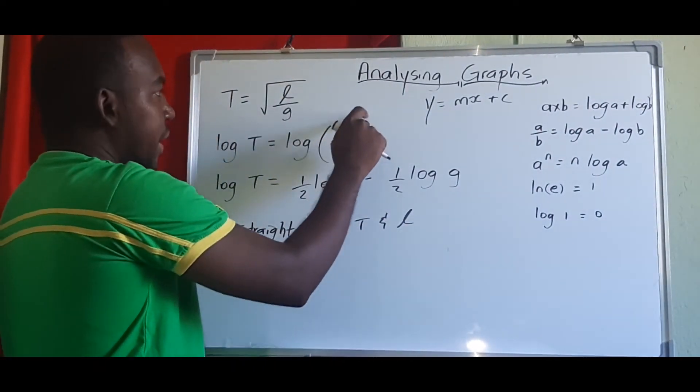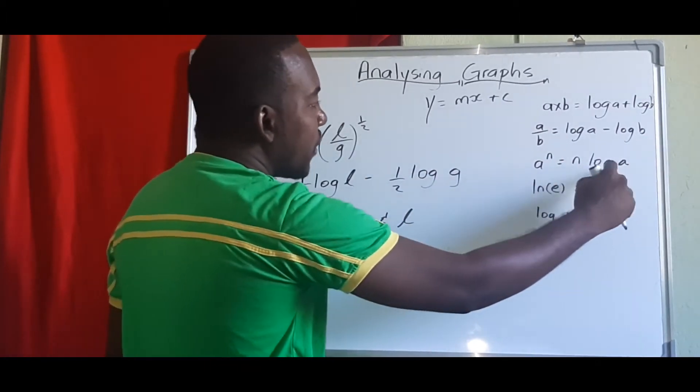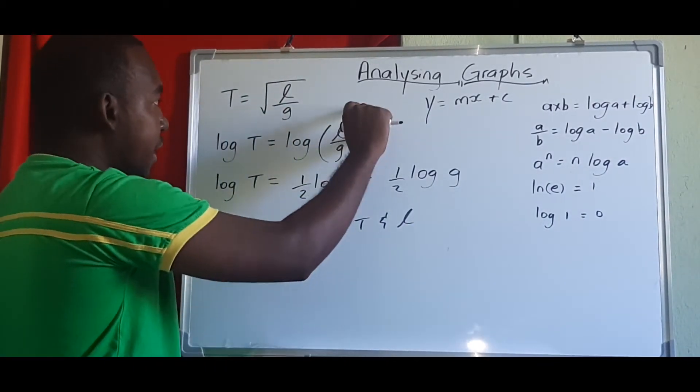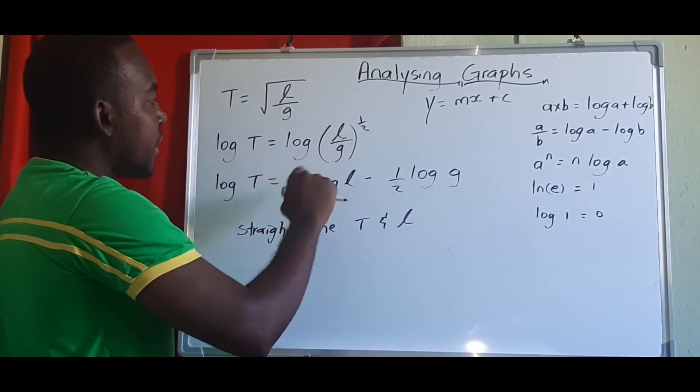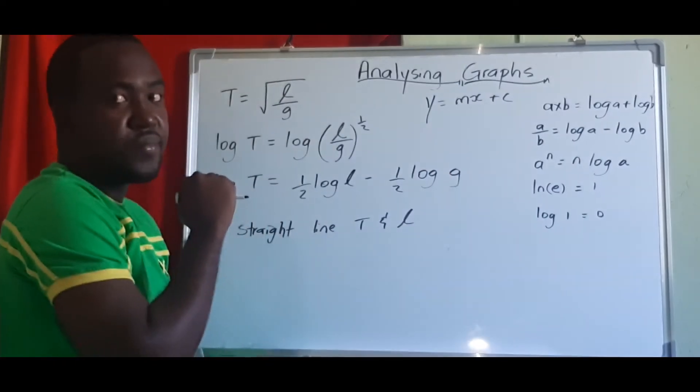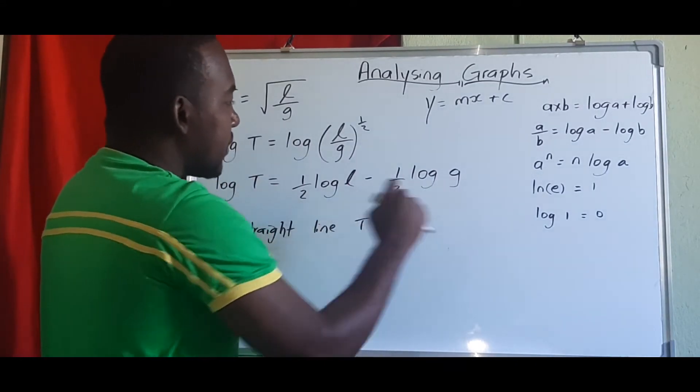And also it takes these two. So a to the n power, when we log it, the n actually falls to the front. So the half will fall to the front, and l over g is the same as l minus g, the log of both. So in this case, we get this.